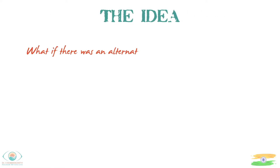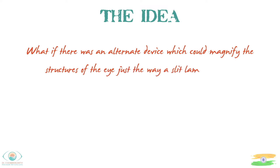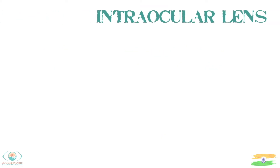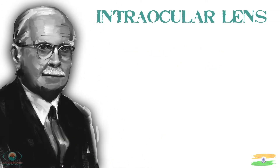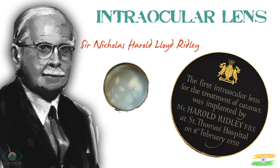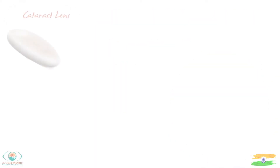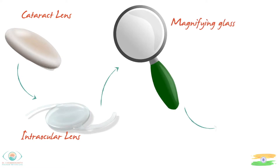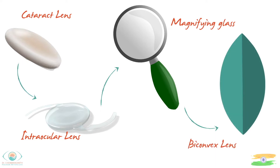So then came the idea — what if there was a device which could magnify the structures of the eye without a slit lamp? Perhaps a magnifying glass or an intraocular lens? The intraocular lens was invented by Sir Harold Ridley around 1950 for the treatment of cataract. All these years we have been replacing the cataract with an intraocular lens — which is nothing but a magnifying glass, a biconvex lens.